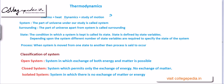Now we have to look at certain basic definitions, starting with system. System can be anything — the part of the universe under our study is called system. It can be as small as an atom or as large as a planet. Whatever we study — whether it's a dead body, a plant, a pen, a board, or a duster — that becomes our system.